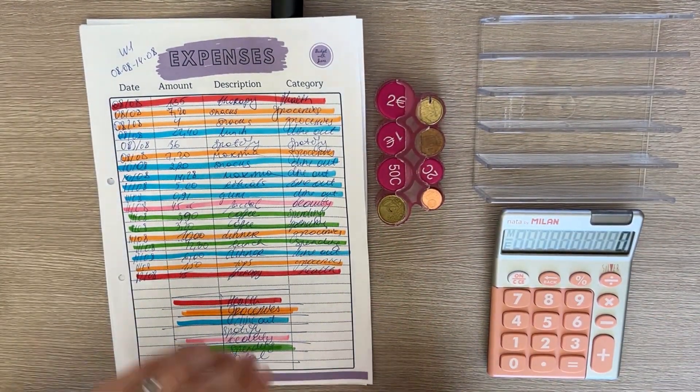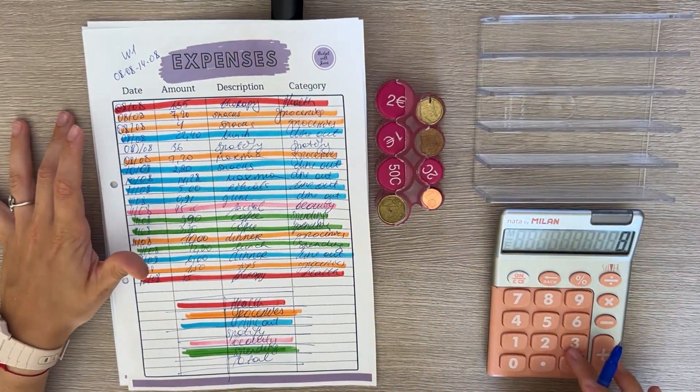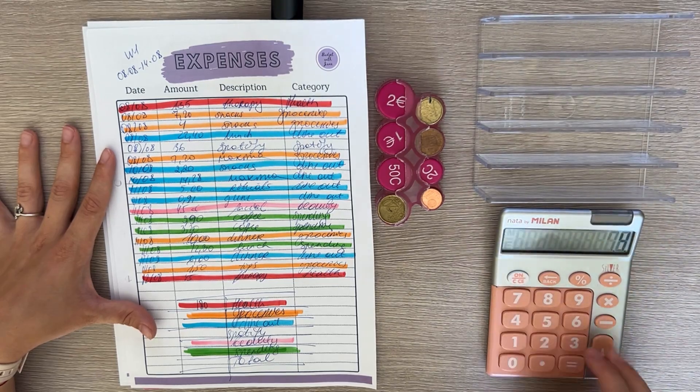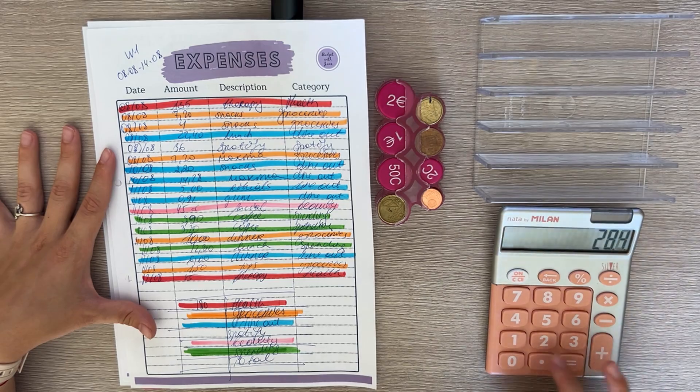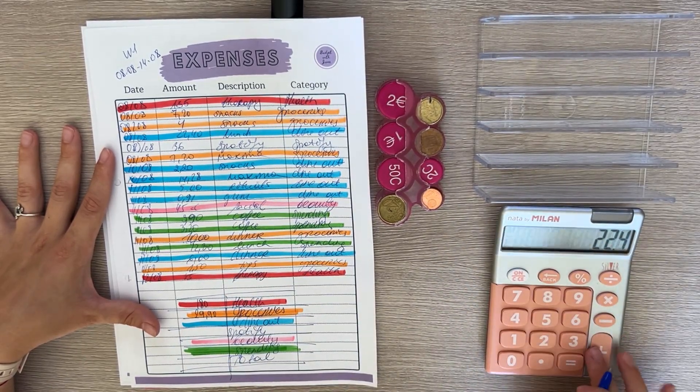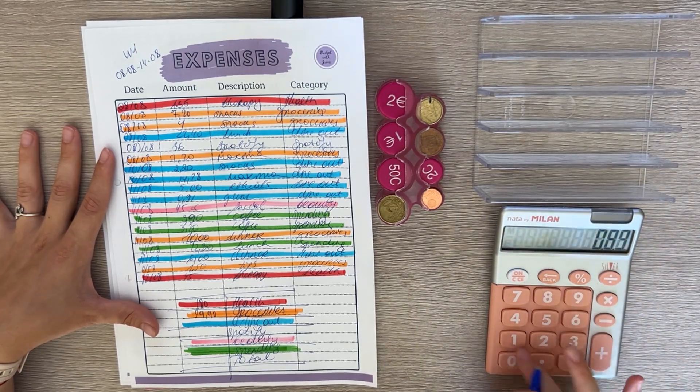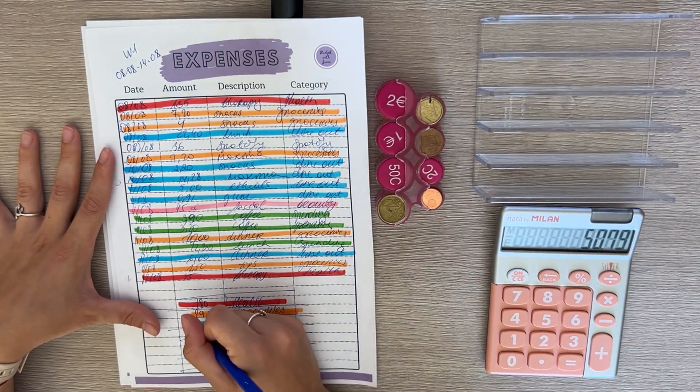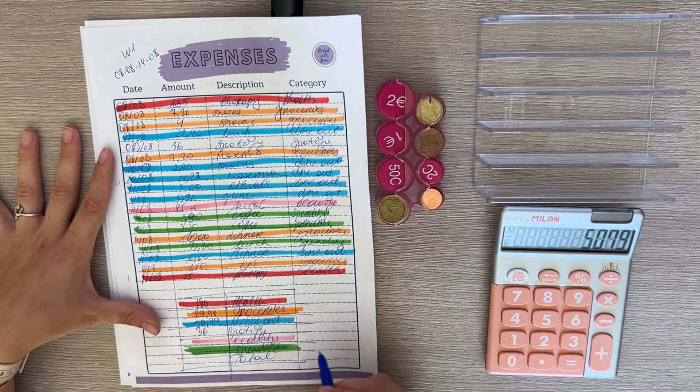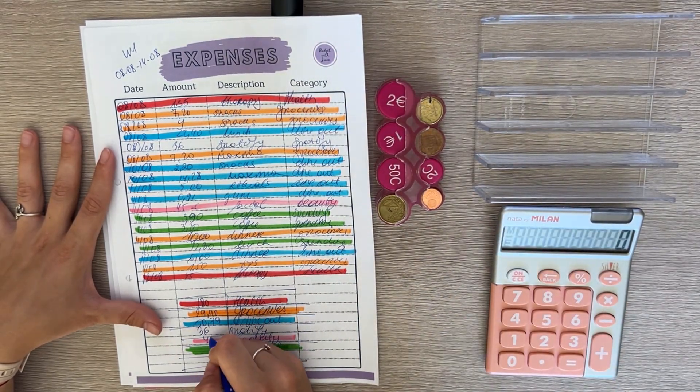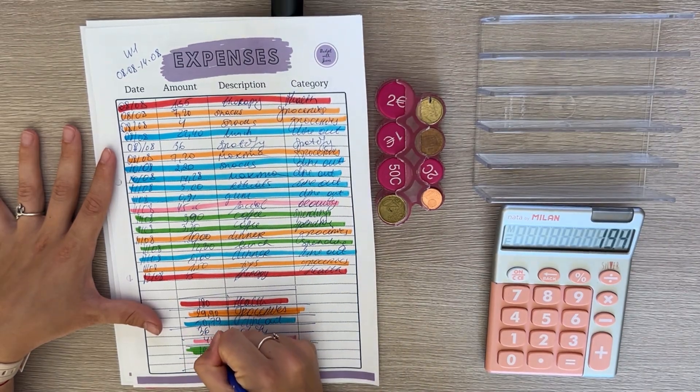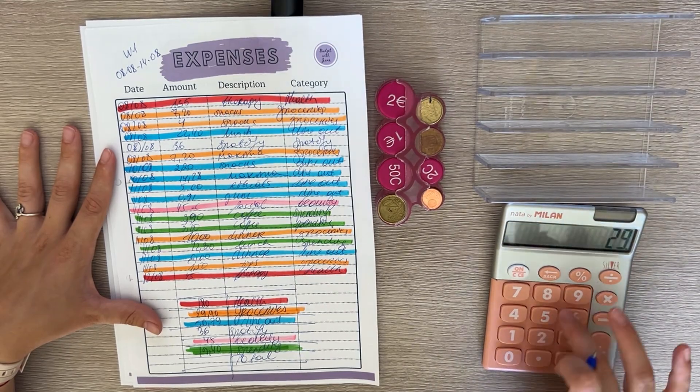Health is 135 plus 45 equals 180. Groceries is 720 plus 4 plus 720 plus 10 plus 150, which is 2,990. Dine out is 2,240 plus 220 plus 1,428 plus 5 plus 91 plus 6, which is 579. Spotify, I paid for my yearly subscription, so that's 36. Beauty is 45 and then spending is 1,940.